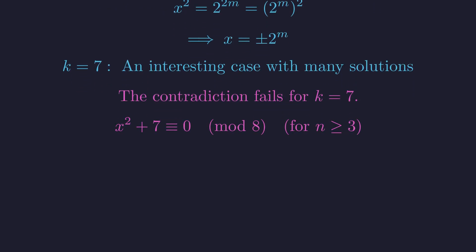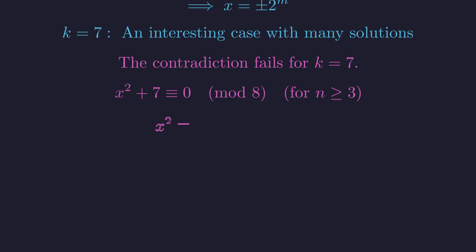For k equals 7 and n of 3 or greater, the equation becomes x squared plus 7 is congruent to 0 modulo 8. Subtracting 7, we find x squared is congruent to 1 modulo 8. This is perfectly consistent with x being an odd number, so our contradiction vanishes.